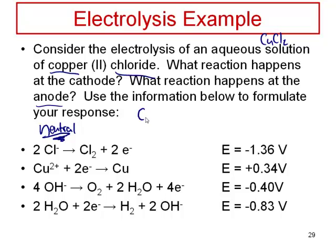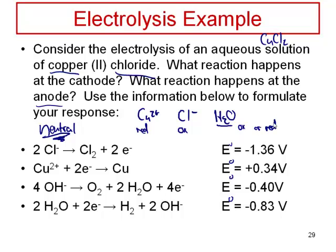Here's what we've got: we're going to have copper 2+ ions in solution, chloride ions in solution, and water in solution. Here are your standard potentials for each of these different possibilities. If we have chloride ions in solution, of course, they could be oxidized. Copper 2+ could be reduced, and water could be either oxidized or reduced. If water's going to be oxidized, here's one possible half-reaction. And if water's going to be reduced, here's the equation for the reduction of water with its associated voltage.